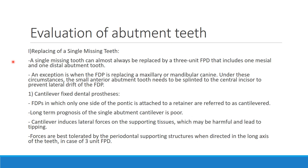Rosenstiel's textbook states that if you are replacing a maxillary or mandibular canine, a small anterior abutment tooth needs to be splinted to the central incisor to prevent lateral drifting of the FPD or fixed dental prosthesis. So it can be done either way — you can take abutments from both sides, or it can be done this way.